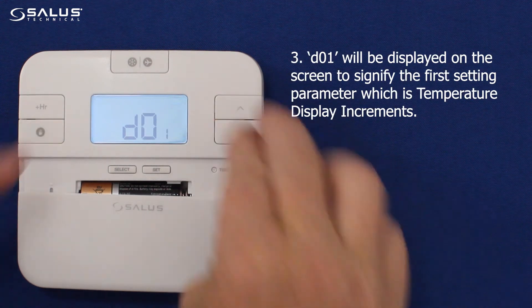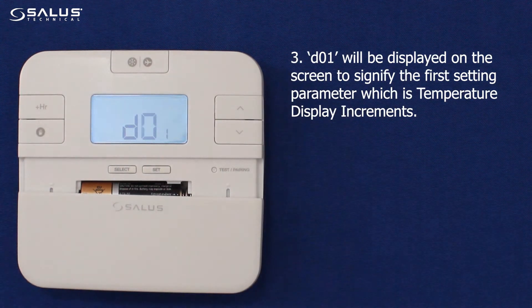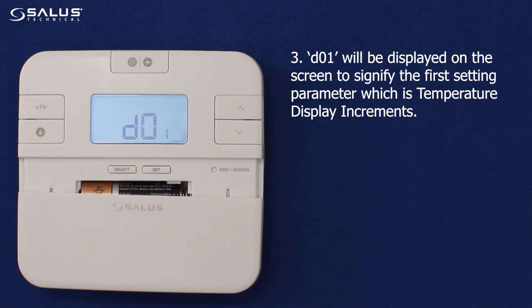3. D01 will be displayed on the screen to signify the first setting parameter, which is temperature display increments.